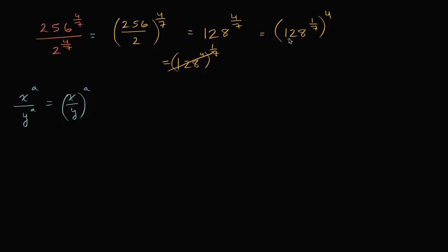But if we can get the smaller number first — what is 128 to the one-seventh power? — then that might be easier to raise to the fourth power. Since this problem is presented without a calculator, it's a pretty good clue that this is something we can figure out on our own. You might recognize 128 as a power of two; maybe two to the seventh is 128. Let's verify that.